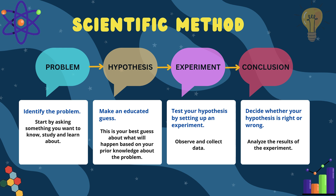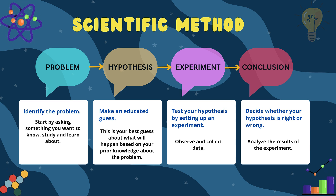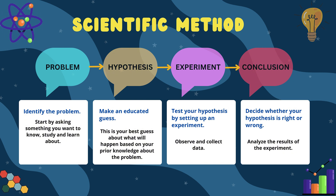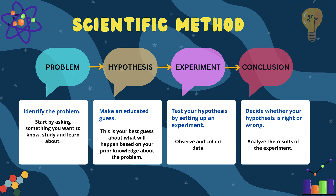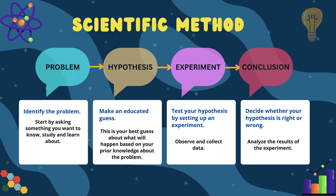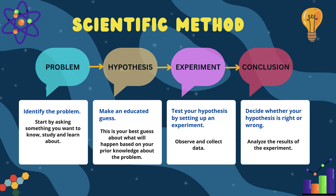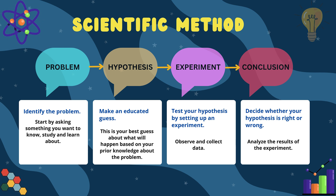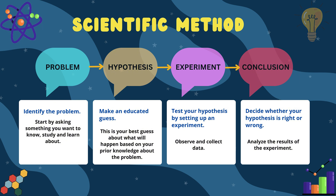First, identify the problem by asking something that you want to know, study, and learn about. For example: what happens if I water a plant with salt water? This sets the stage for your investigation. Next, hypothesis — an educated guess or your best guess about what will happen based on your prior knowledge about the problem. You might say: I think the plant will not grow well with salt water because it may harm its roots.